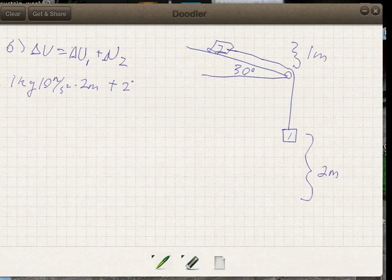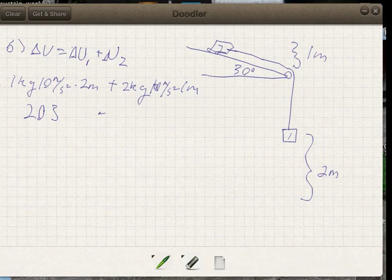Plus for the second mass, we have 2 kilograms times gravity times the distance it falls. Now it moves 2 meters, but because the angle is 30 degrees, this is only a 1 meter drop. And so this winds up being 20 kilogram meters per second, that's kilogram meters squared per second squared, that's a joule.